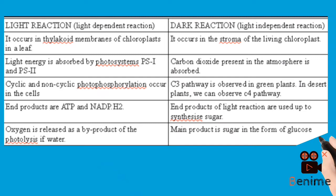Lastly, in the light stage, ATP and NADPH2 are produced as end products with oxygen as the byproduct, while in the dark stage the main product is sugar in the form of glucose.